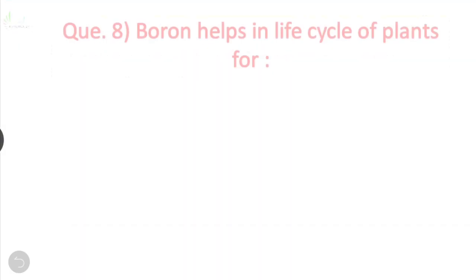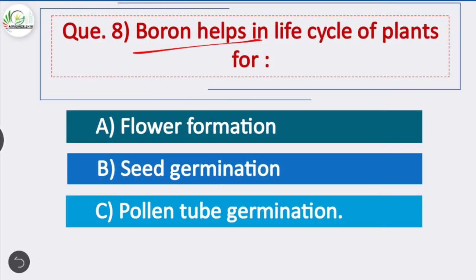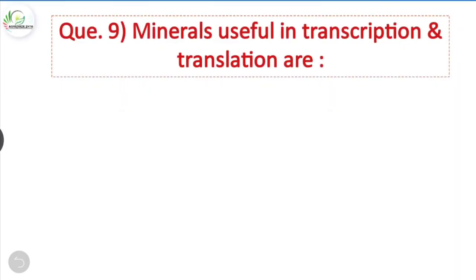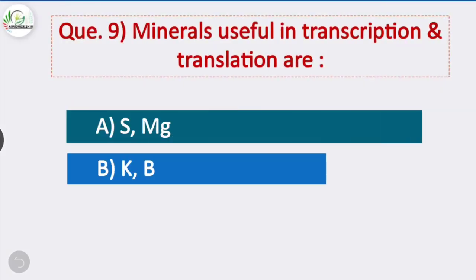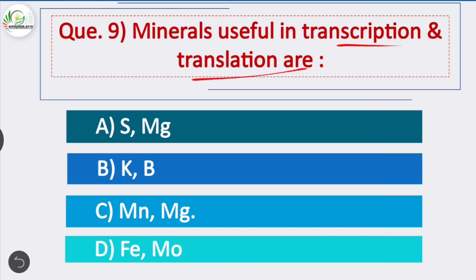Question 8: Boron helps in the life cycle of plants — option C is correct — boron helps in pollen tube germination. Question 9: Minerals involved in transcription and translation are — option C is correct — magnesium and zinc are the minerals involved in transcription and translation.